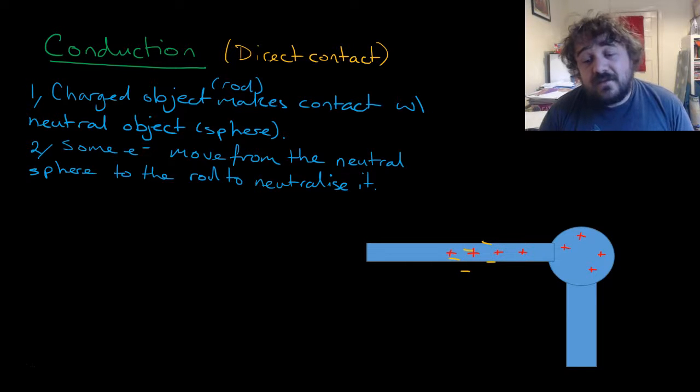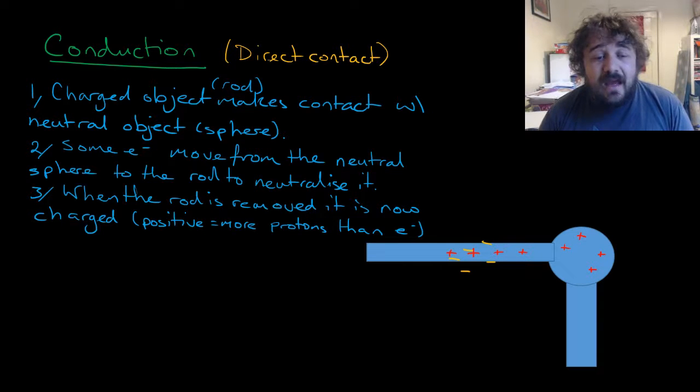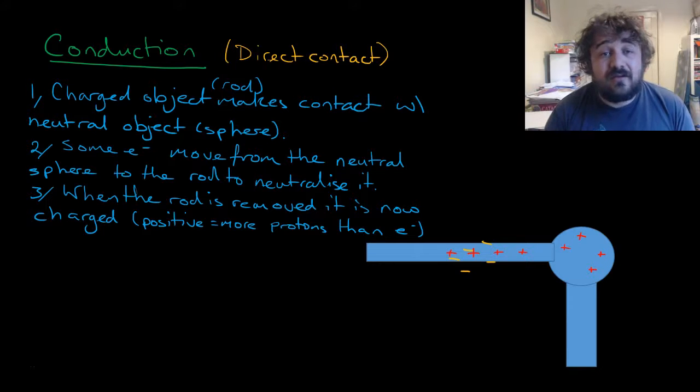Now this rod may be neutralized, it may not, it probably won't. They'll probably just share the electrons. And when the rod is removed, the sphere or the formerly neutral object is now charged, and it will be positive because it has more protons than electrons. Remember it lost some of its electrons to the rod.